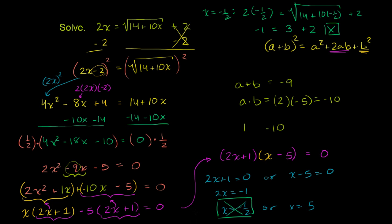The reason x = negative 1/2 showed up is that it would have been valid if we were taking the negative square root — giving negative 3, which would match. But since we need the principal (positive) square root, negative 1/2 does not work. So let's try x = 5.